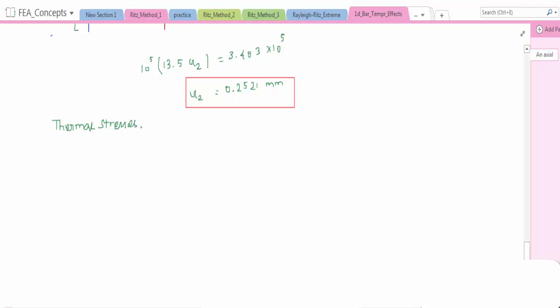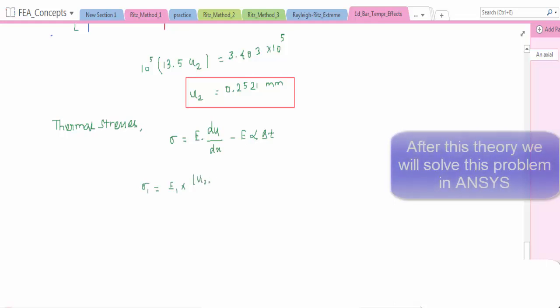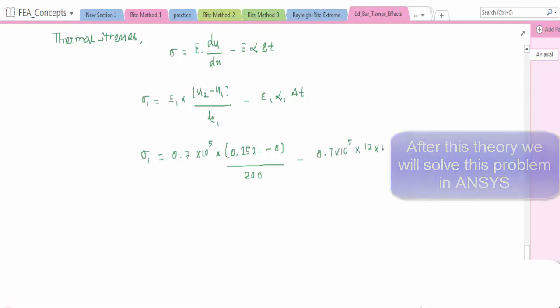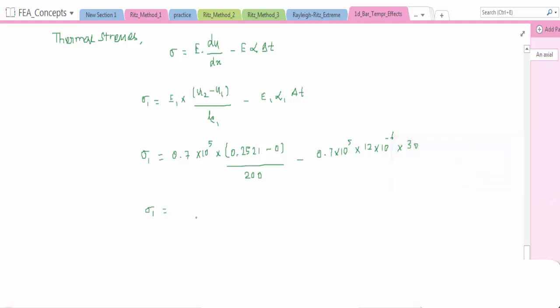Now we have to find out the thermal stresses. The formula for thermal stress: sigma equal to E du/dx minus E alpha into delta T. We will solve and extract the results of stresses also in ANSYS after this theory. So sigma 1 equal to 0.7 x 10^5 (U2 is 0.2521 minus 0) divided by length of the element minus 0.7 x 10^5 x 23 x 10^-6 x 30.